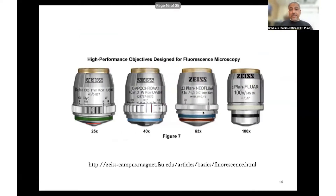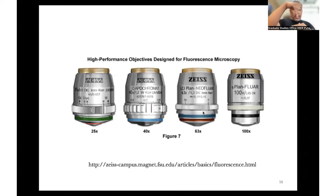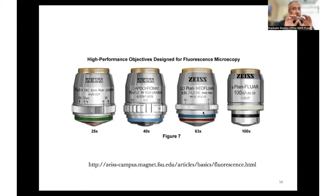Microscope objectives have a certain magnification and numerical aperture, which together determine the efficiency with which you can see. There are air objectives, where the numerical aperture is determined by the air between the objective and the sample. Water objectives use a small layer of water between the objective and sample, changing the numerical aperture enough to see things you couldn't with an air objective. Then there are oil immersion objectives.